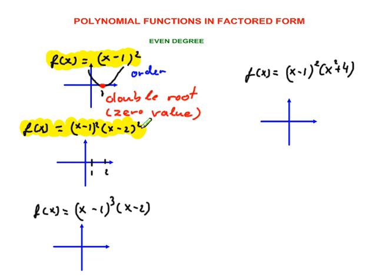We have two factors here. Both of them have order 2, which also would mean that as you approach to 1 on x-axis or to 2 on x-axis, you're not supposed to cut through the line.